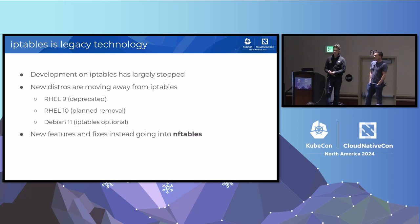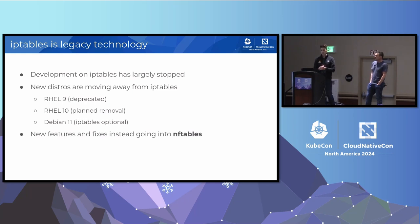The final reason we need to move away from iptables is that it's legacy technology. Development has stopped on iptables in the kernel and all of that development has moved over to nftables. We want to take advantage of new features and fixes. Red Hat 10 is planning to remove iptables altogether, Debian 11 is going to make it an optional package — not installed by default — and we expect most distributions are going to go this way.